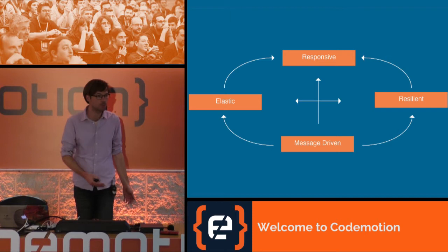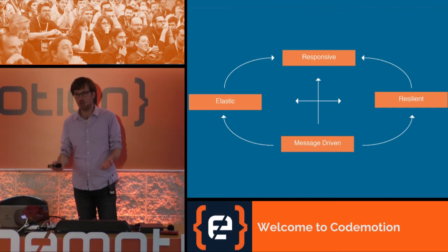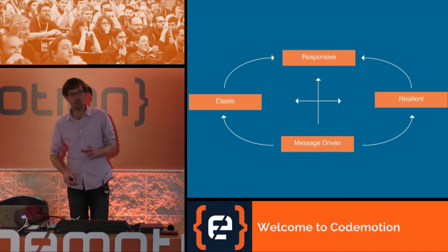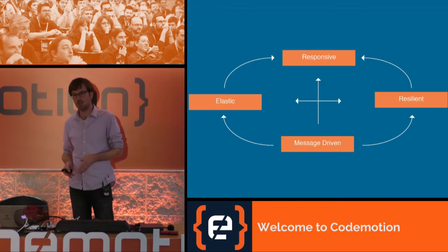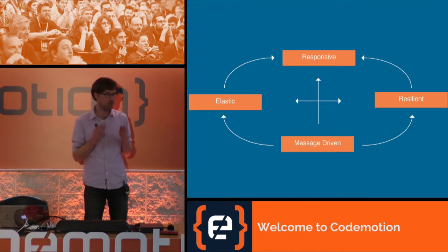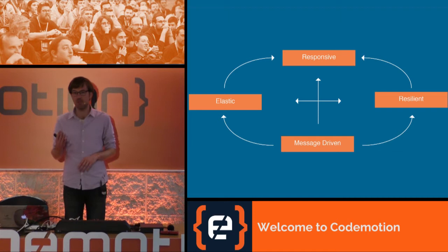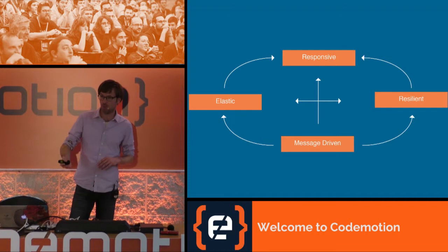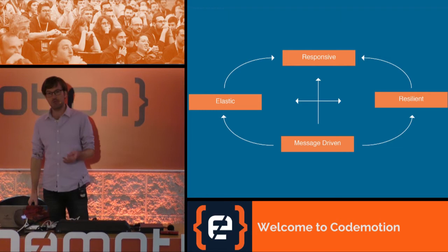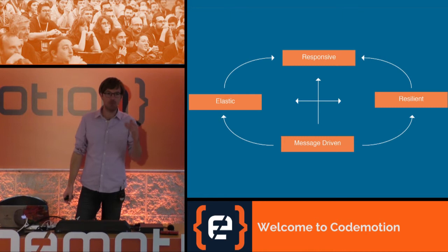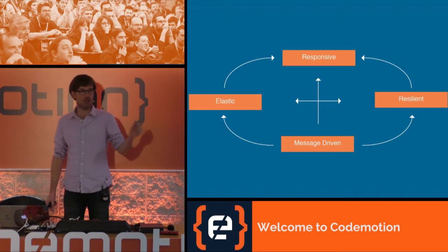We need reactive architectures and reactive systems. The cornerstone of reactive systems is that they should always be responsive — the user should always get some feedback when interacting with your application, even under high load. Responsiveness under high load is what we call elastic. Applications composed of multiple modules should also be fault tolerant, staying responsive even when there are faults — this is called resilient. The way to achieve this is loose coupling of modules, communicating with asynchronous messages.